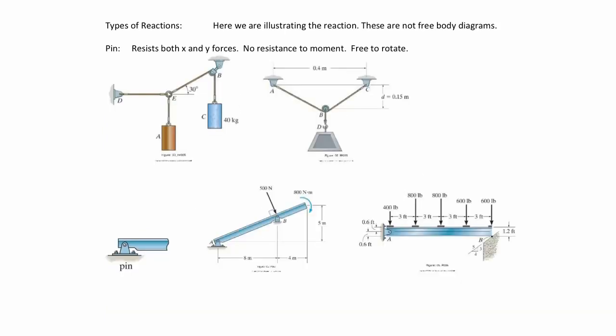We have several types of reactions to consider in this section. The first one is a pin. A pin resists forces in both X and Y, but it has no resistance to moment — it's free to rotate. For example, with a string at an angle, there would be a force in X and a force in Y. But if you were to try to rotate the string, there would be no resistance to rotation.